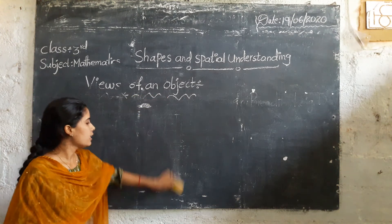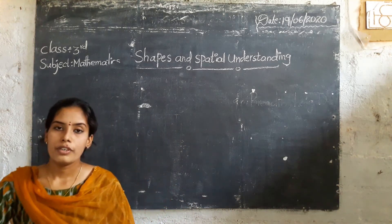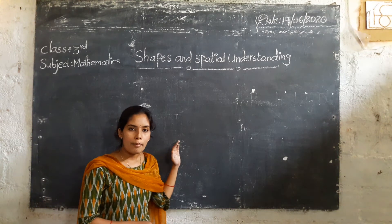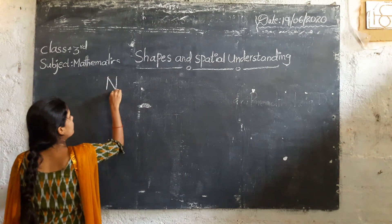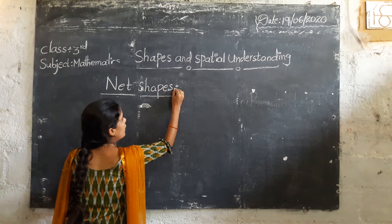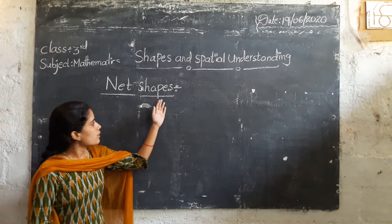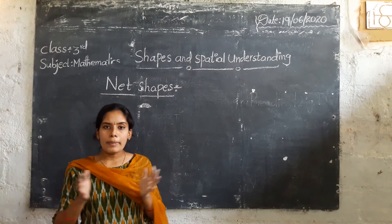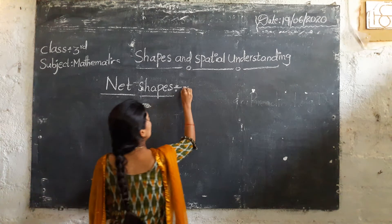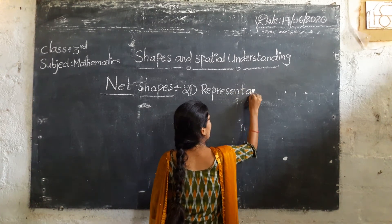How many views are there? Front view, side view, and top view. Next we will discuss about one more topic — that is net shapes. What is the meaning of net shapes? A net shape is a 2D representation of a 3D object.